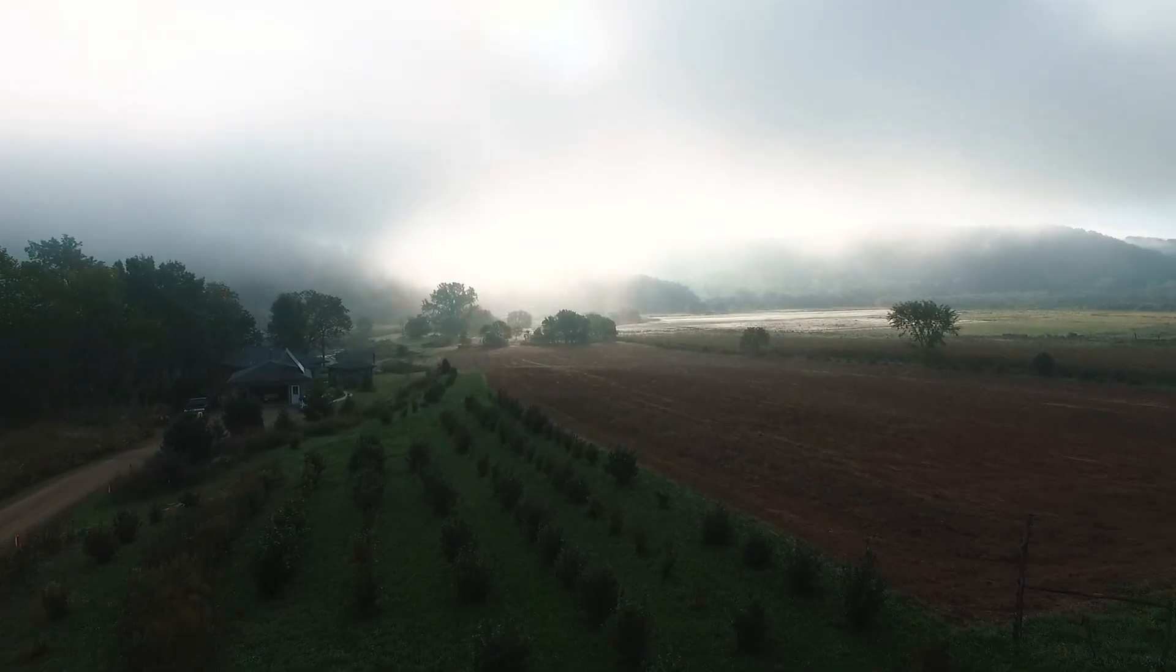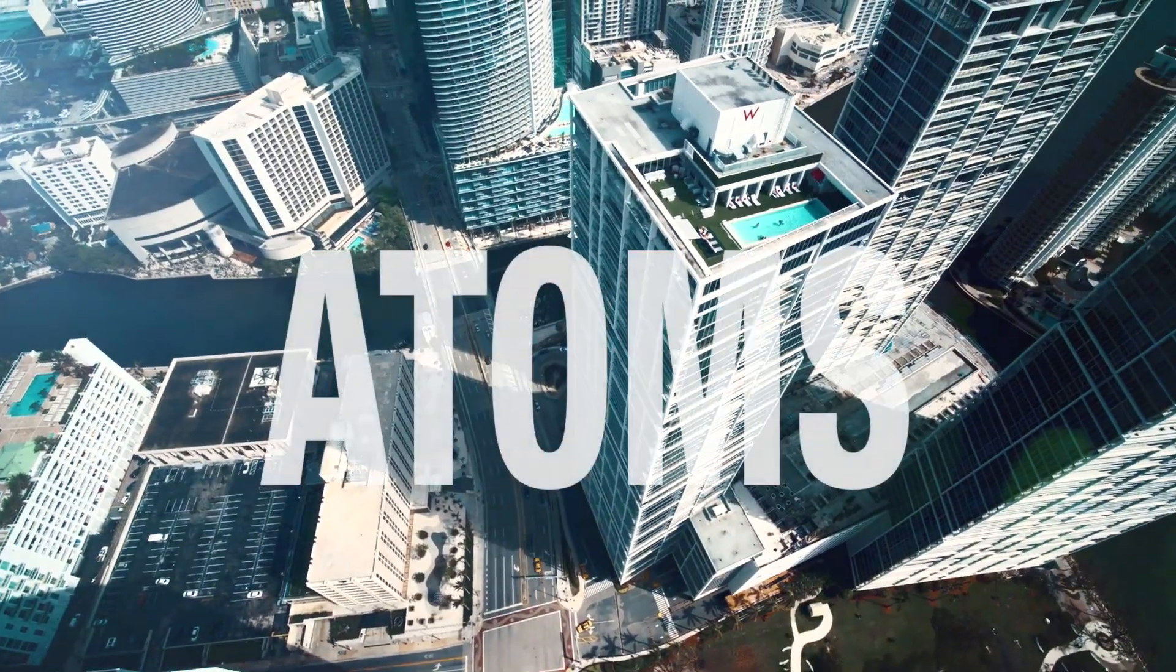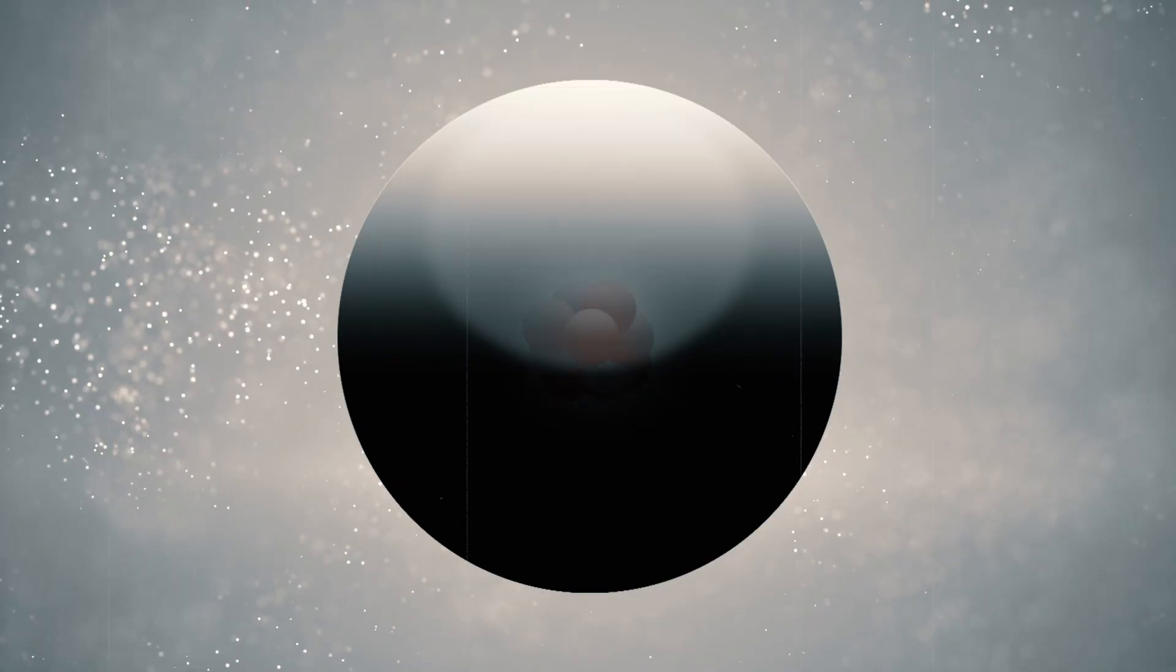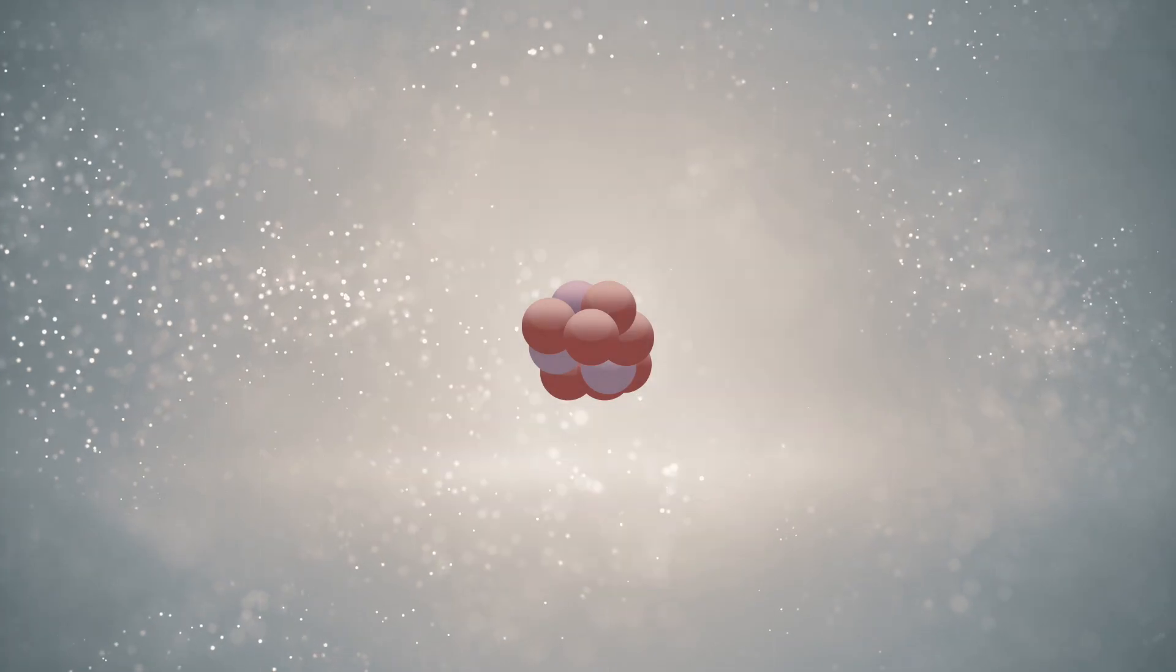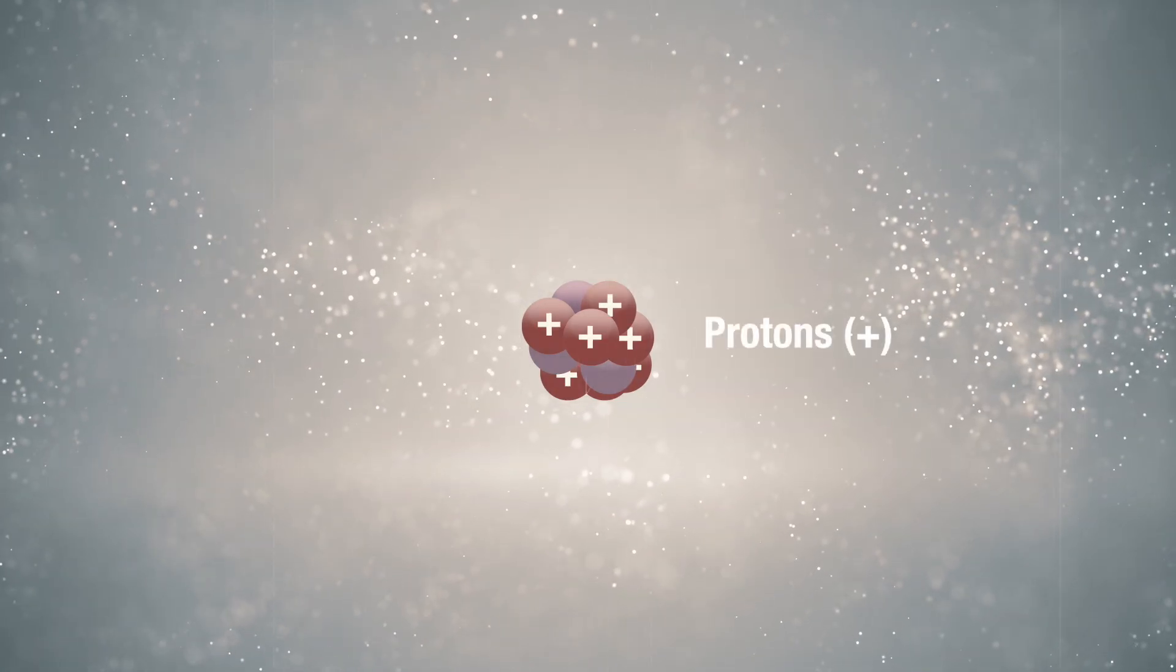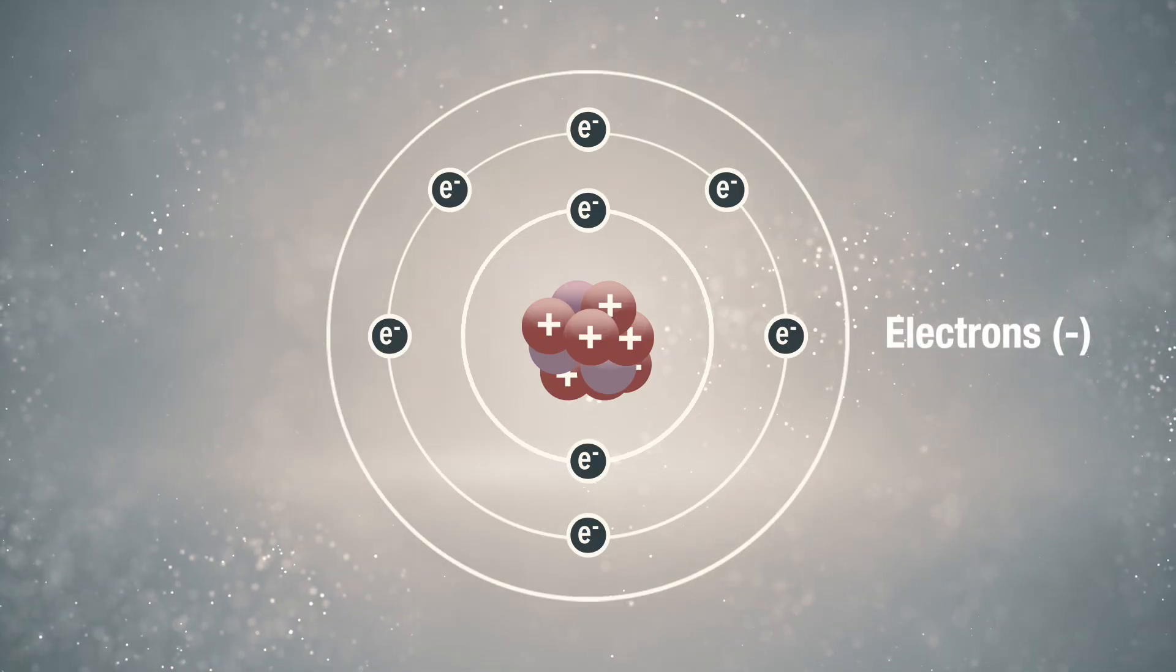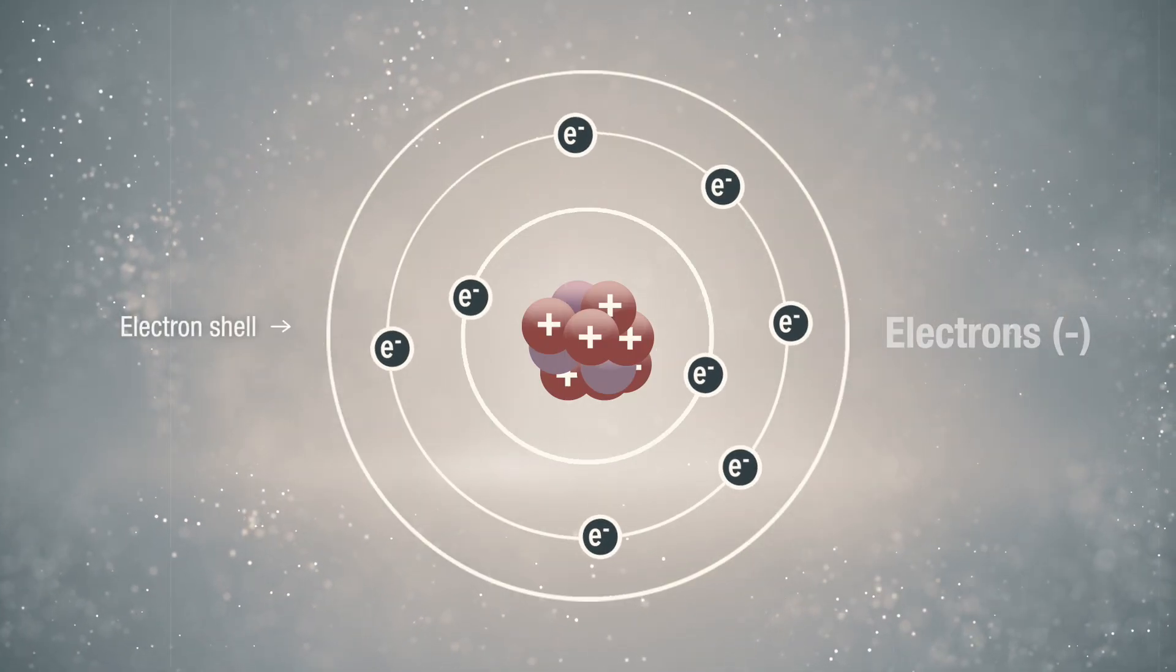Everything around us, no matter what we look at, is made up of atoms. And all atoms have a similar fundamental structure. The core is composed of positively charged protons and is surrounded by an equal number of negatively charged electrons that move around the core in defined energy layers called electron shells.